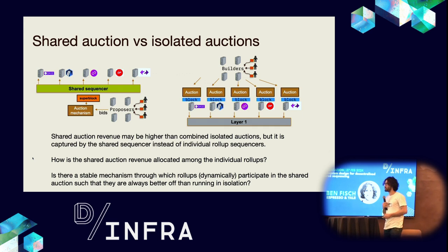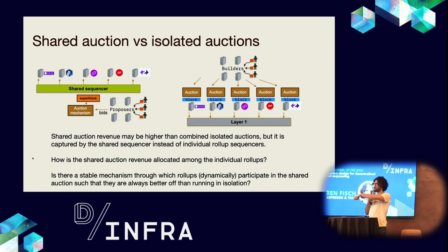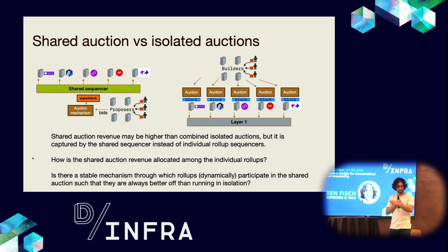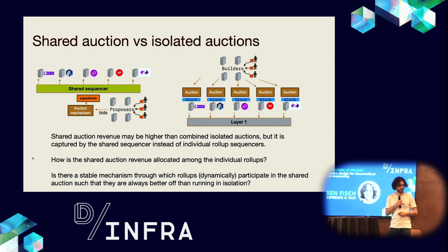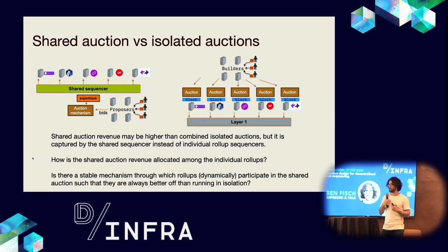The problem with this shared auction is that because rollups are essentially delegating the rights to run this auction to a shared infrastructure, the revenue captured through the auction now flows to the shared sequencer instead of individual rollup sequencers. It's the same problem as when Uniswap runs on Ethereum — it delegates the right to auction off its block space to the L1 proposer, so the revenue is captured by Ethereum L1 and not the application. Is there a mechanism through which rollups can dynamically participate in these shared auctions such that they're always better off than running in isolation?